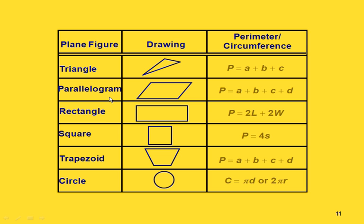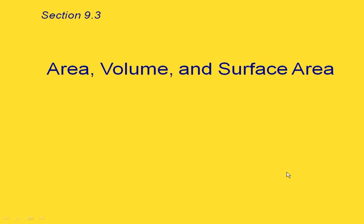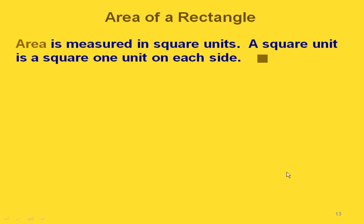Here's a table that shows several different types of figures and their perimeter formulas, or in the case of the circle, the circumference formulas. Now let's talk about area, volume, and surface area. So first, area. If we're looking at a rectangle, we can see this pretty easily.